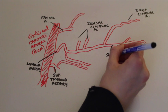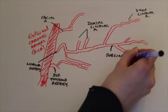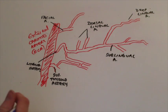The sublingual arteries are at the end of the lingual artery and it supplies numerous branches to the floor of the mouth and the sublingual glands.